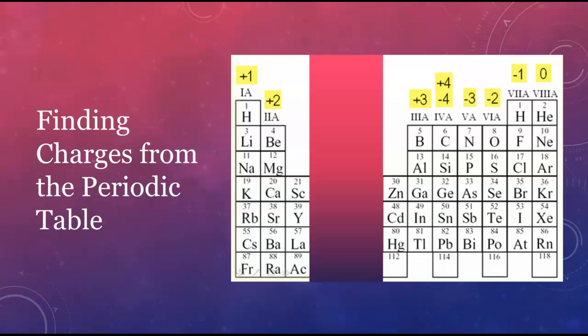Nonmetals all gain electrons to form anions. The number of electrons gained is found by counting the steps needed to go from a given nonmetal to the noble gas group. Chlorine takes one step, and so it forms a one minus anion.